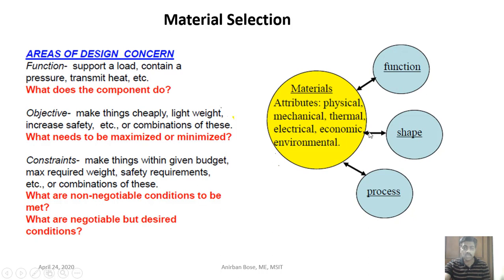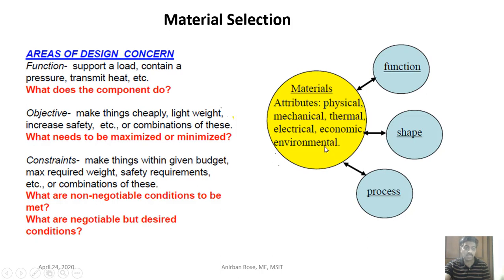These properties are important parameters in selecting materials, but they are not the only deciding factors. When you try to give shape to a material, you need manufacturing processes. Whether giving a certain shape to a component is costly or easy is a very important decision-making factor. Other factors include the extraction process, availability of the material, and different hardening or strengthening mechanisms.